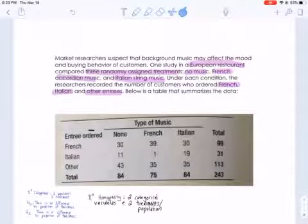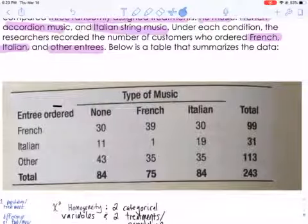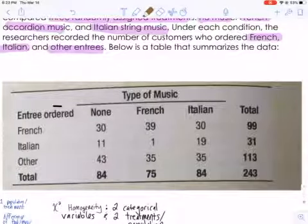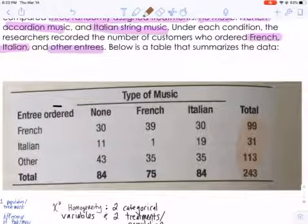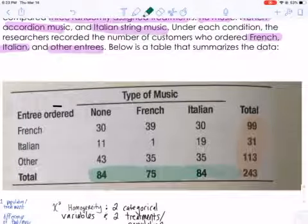So right now, we're running a homogeneity test. We need to figure out our expected counts before we figure out our chi-square statistic. In order to do that, we are going to focus on two things: our column totals and our row totals here.